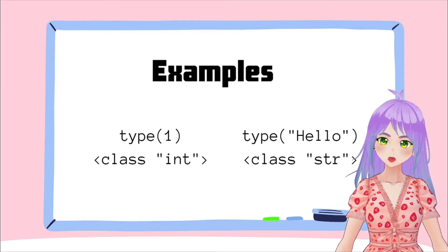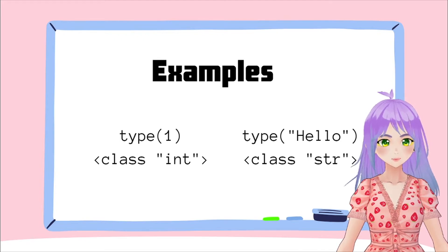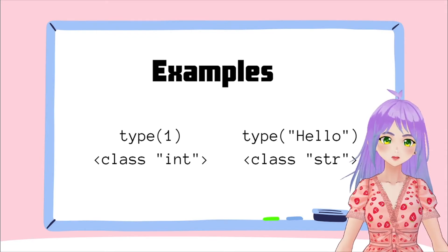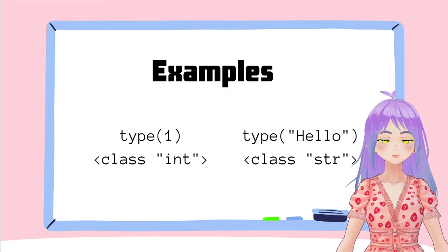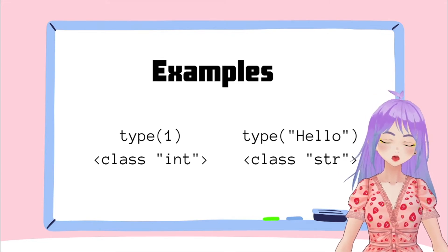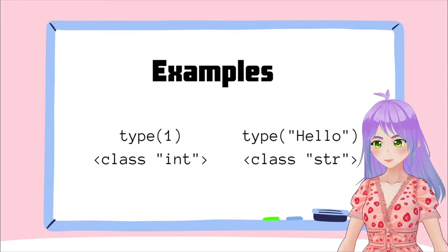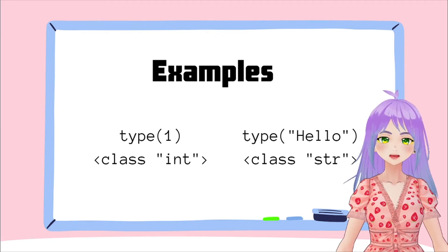The only thing that you need to do is go to your terminal and write this down. So you write type, open parentheses, 1, and close parentheses. And then you press enter. What Python is going to tell you is that this number one is going to be of class int for integer. And if you do it this time with the text hello, for example, type, open parentheses, quotation marks, hello, close quotation marks, close parentheses, and you press enter. Python is going to tell you that the class for this text is str, meaning string or text.